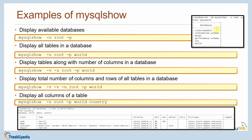For example, running mysqlshow -u root -p [password] with no further arguments returns all databases. Specifying a database name returns all its tables. Using the verbose flag (-v) displays the table along with the number of columns. Using -v -v displays the total number of columns and rows of all tables in a database. If you specify the database name followed by the table name, it displays the field name, type, collation, keys — the full structure of the table columns and their data types.